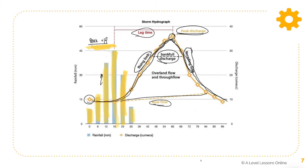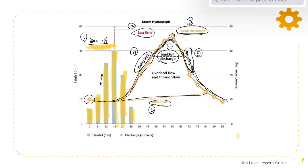To summarize, the seven main components of a storm hydrograph are: peak rainfall, lag time, peak discharge, rising limb, recession limb, base flow, and bank full discharge. These are very crucial in understanding what a storm hydrograph is. If you have any questions, leave them in the comments below.